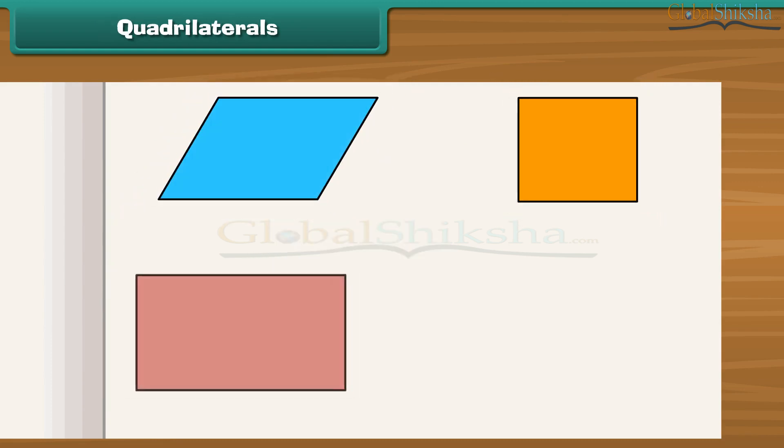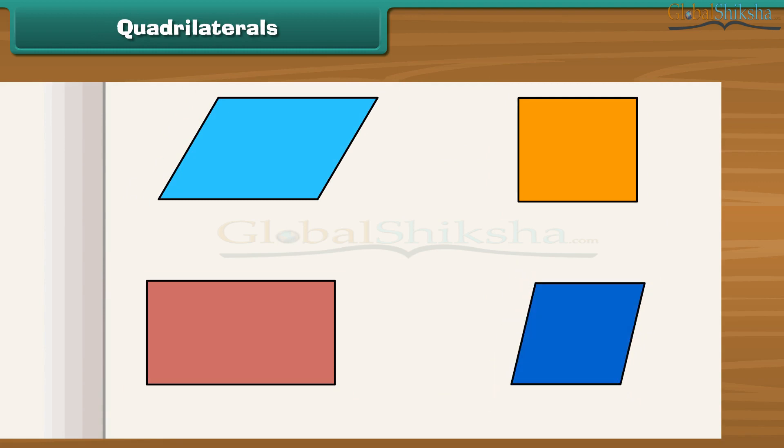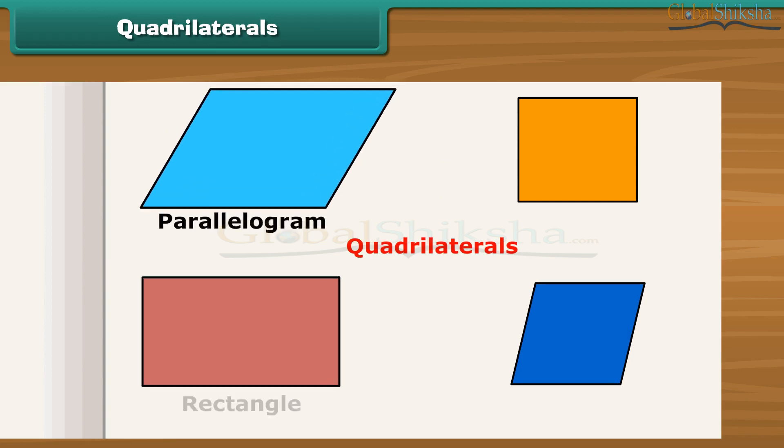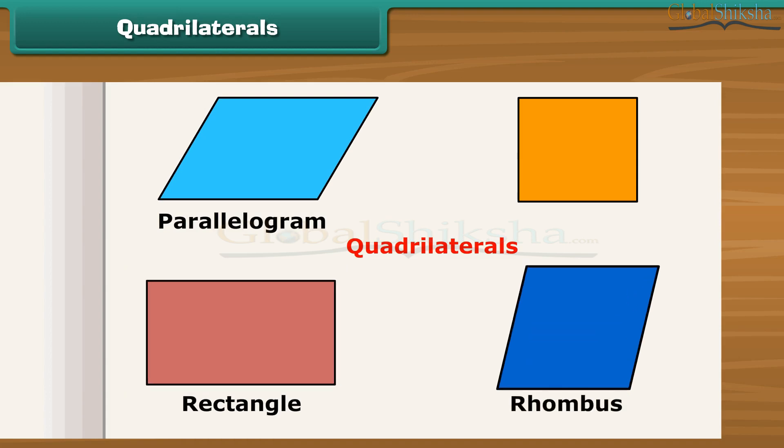What will you call those polygons which are formed by four line segments? Such polygons are called quadrilaterals. There are several types of quadrilaterals: parallelogram, rectangle, rhombus, and square. Let us discuss each type in detail. A quadrilateral having opposite sides parallel is called a parallelogram. For example, a slide is a parallelogram.